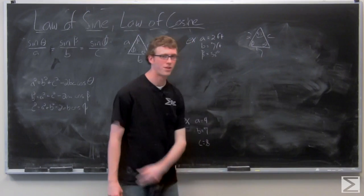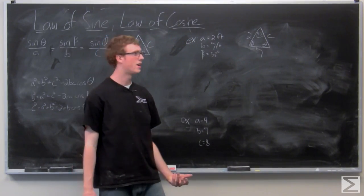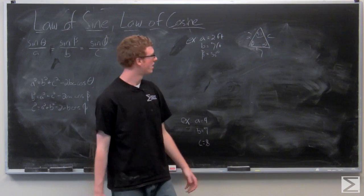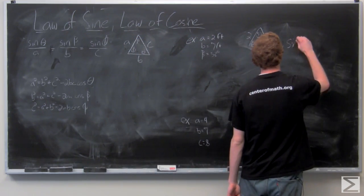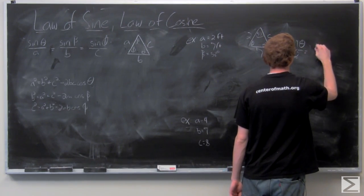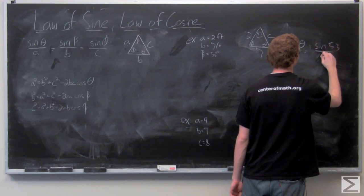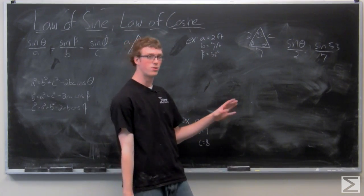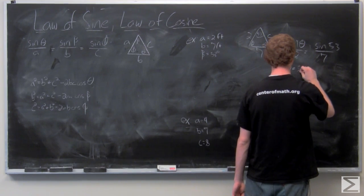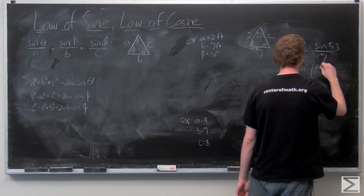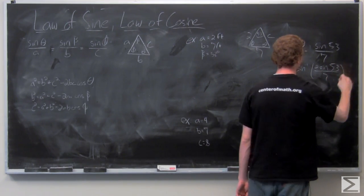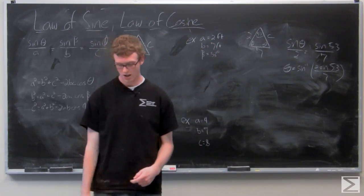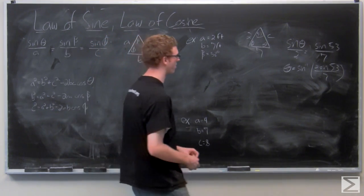What we're going to do first is find theta using the law of sines. We know that beta is acute, and we know theta is going to be acute because it is opposite a shorter side of the triangle that is already opposite an acute angle. So we have sine of theta over 2 equals sine of 53 over 7. Multiply both sides by 2 and take the inverse sine. You need your calculator to calculate both of those, and you get theta equals 13.2 degrees.